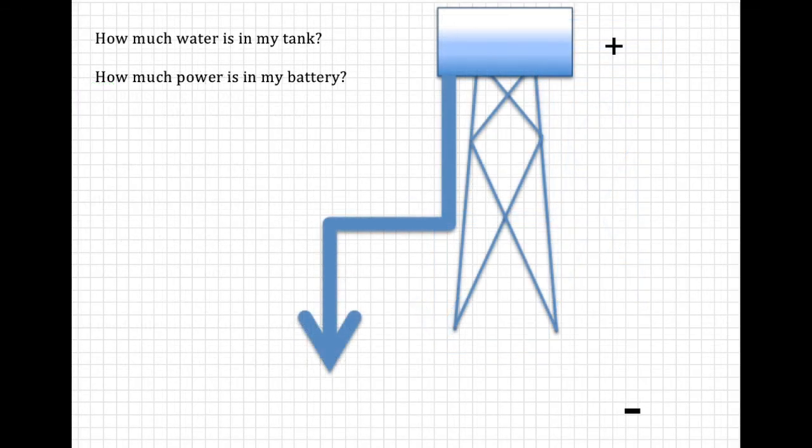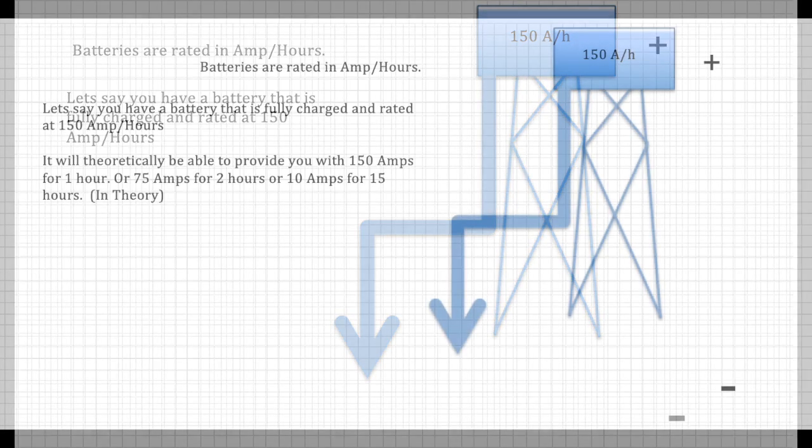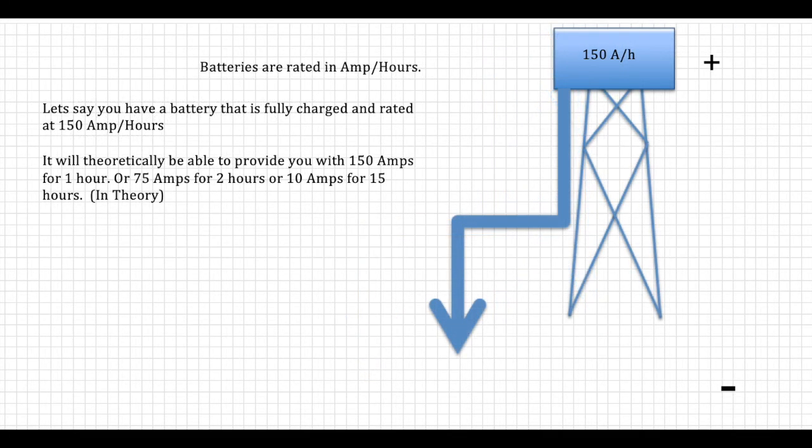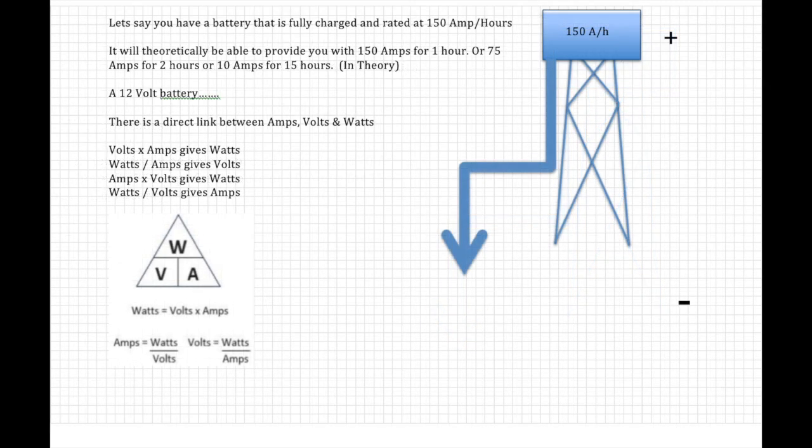So how much water is in my tank? Or how much power is in my battery? Same difference. So batteries are generally rated in amp hours. Let's say you have a battery that when fully charged is rated at 150 amp hours. Well theoretically it should be able to provide you with 150 amps for 1 hour, or 75 amps for 2 hours, or 10 amps for 15 hours. In theory.